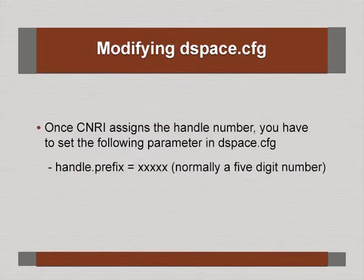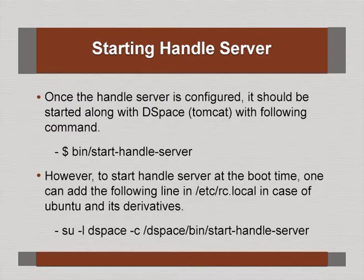Once you get your CNRI handle — after payment of the initial registration and annual subscription — they allot a 5-digit handle number. Once CNRI assigns the handle number, set the following parameters: first, handle.prefix equal to whatever number you got. Do not forget to uncomment the hdl.handle.net canonical prefix. You should not use your local URL as the handle canonical prefix.